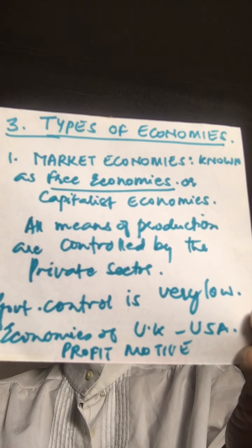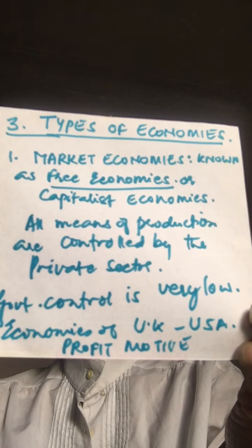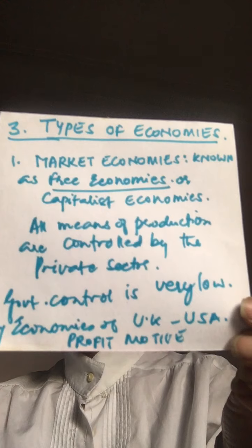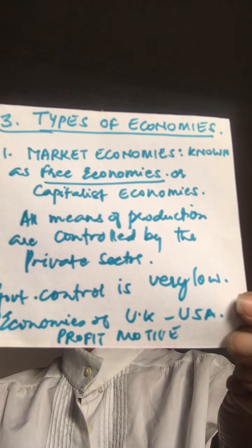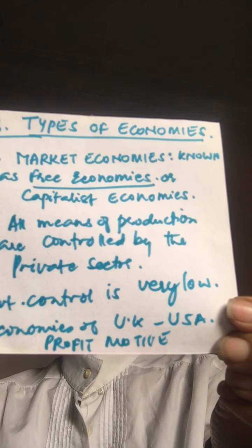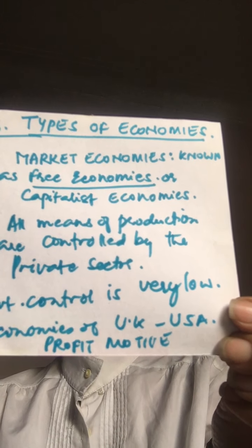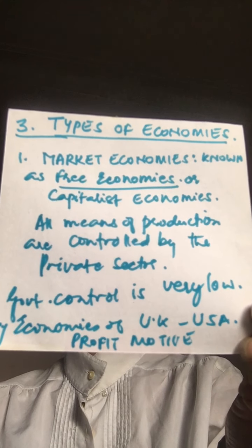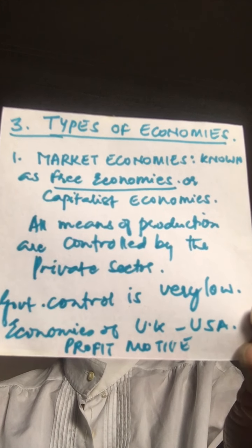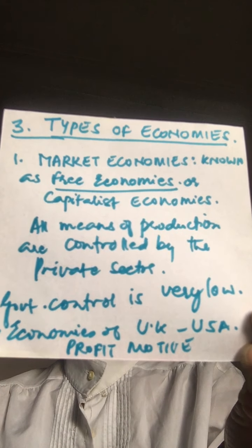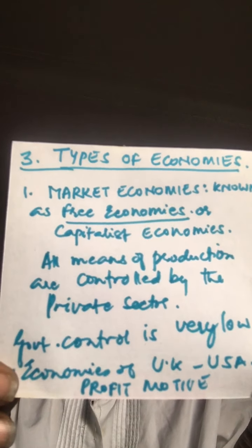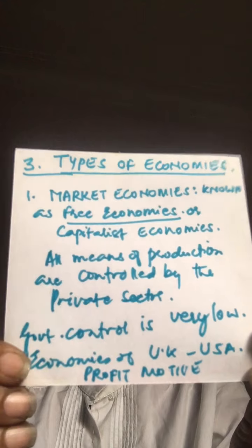Because the consumer buys goods according to his choice, the producer has to respect his decision. Most resources are controlled by the people, the market determines the prices of goods and services, and there is very little intervention by the government. It is the private sector that dominates economic activity. Examples include the UK and the USA.